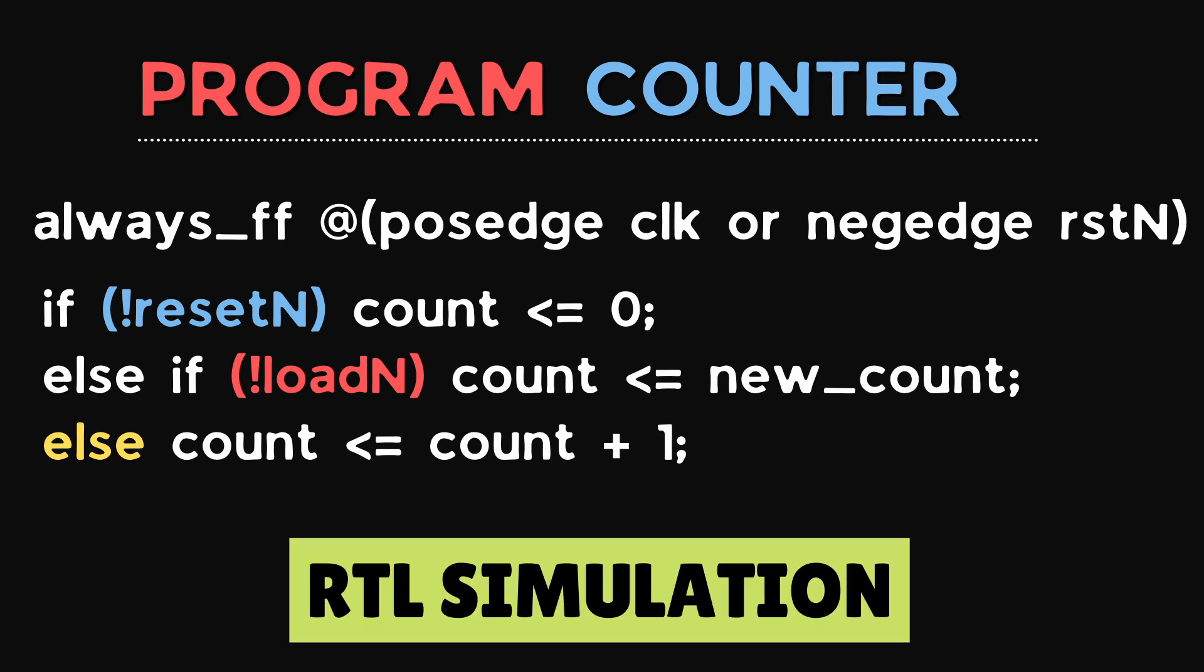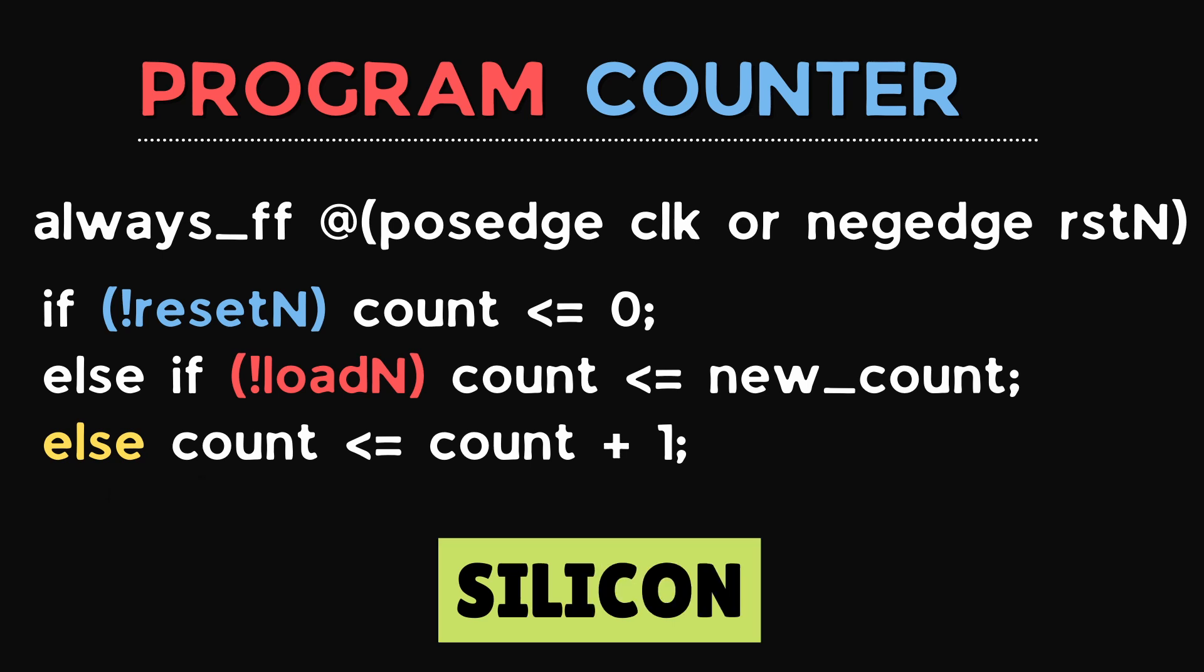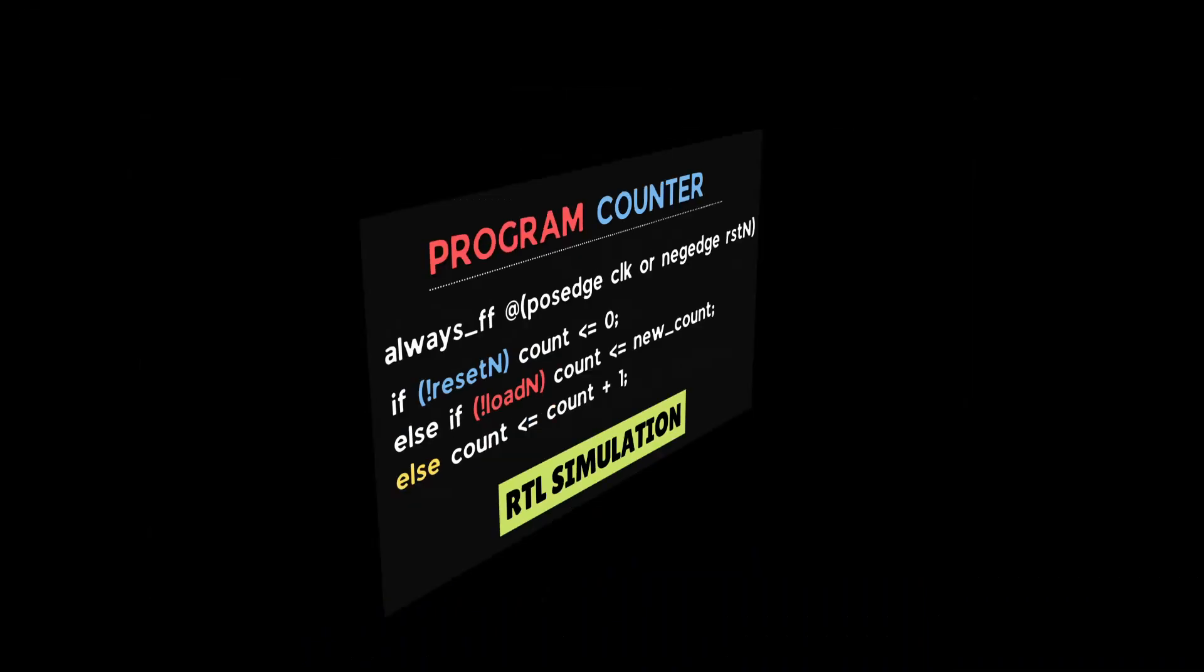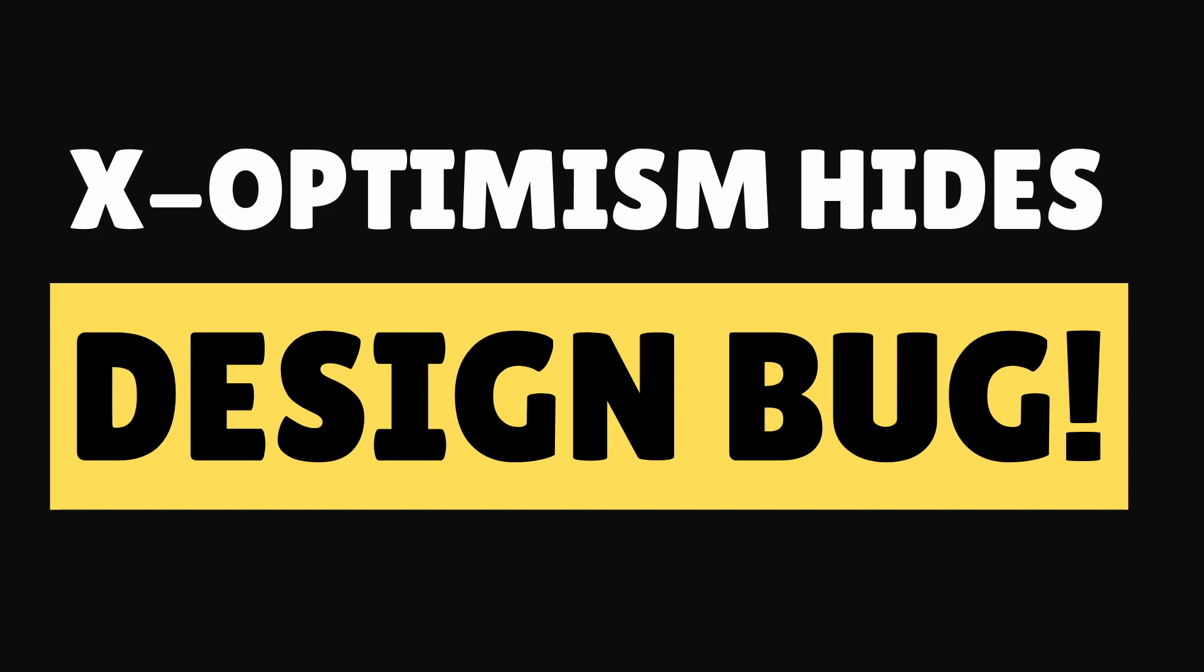The RTL simulation will always take else branch which increments the counter, whereas silicon sees loadN as being either 0 or 1. In RTL simulation, the design appears to work correctly, but this is a serious design bug that could go undetected.